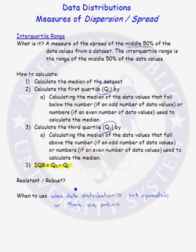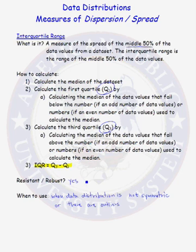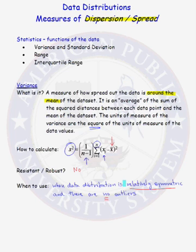Is the interquartile range a resistant statistic? The answer is yes. Presumably, the middle 50% of the data does not contain any extreme values, so it is a resistant statistic. This means you should use the IQR as your measure of dispersion when there are outliers in your data set or the data distribution is not symmetric. Of the four measures of dispersion, the only one that is resistant is the interquartile range.